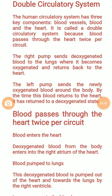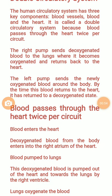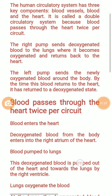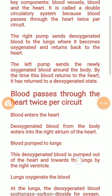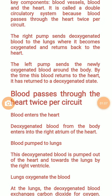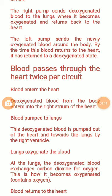The right pump — the right auricle and right ventricle — sends deoxygenated blood to the lungs, where it becomes oxygenated and returns back to the heart. The left pump — the left auricle and left ventricle — then sends the newly oxygenated blood out to the body.